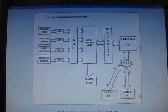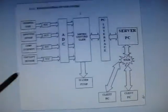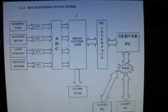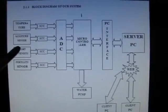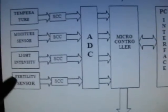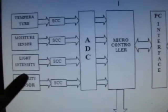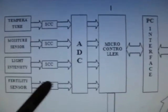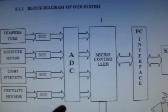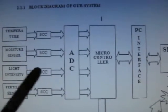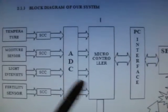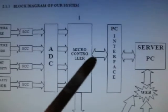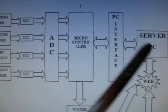First of all we will see the block diagram. We are using four sensors namely temperature sensor, soil moisture sensor, light intensity, and fertility sensor. The data or values from these sensors are properly signal conditioned and then given to the next stage which is the ADC. This ADC will convert the analog values of the sensors and convert it into digital data to the microcontroller. The microcontroller will in turn transfer the data received from the sensor to the server PC.